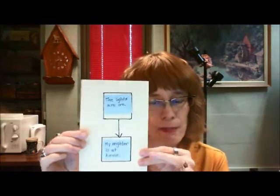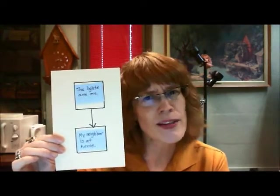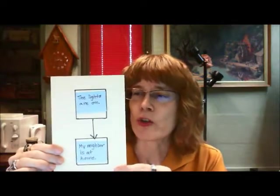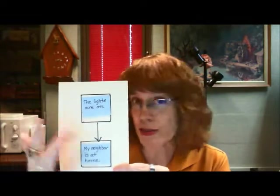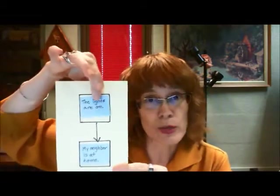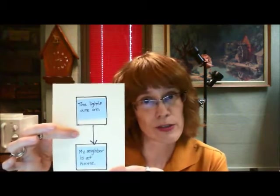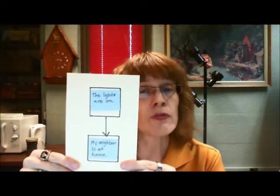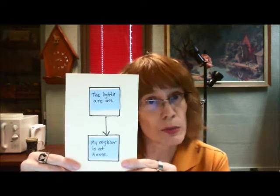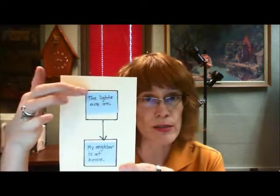Last time we saw this map, and the point of the discussion last time was to introduce you to the basics of argument mapping. This is a reason, this is the conclusion, and this is an inference. This is the first of three ways that two ideas can be related to each other, just as reason and conclusion.